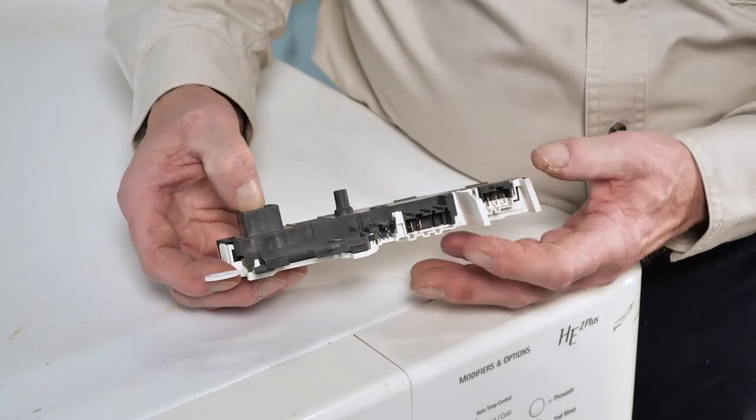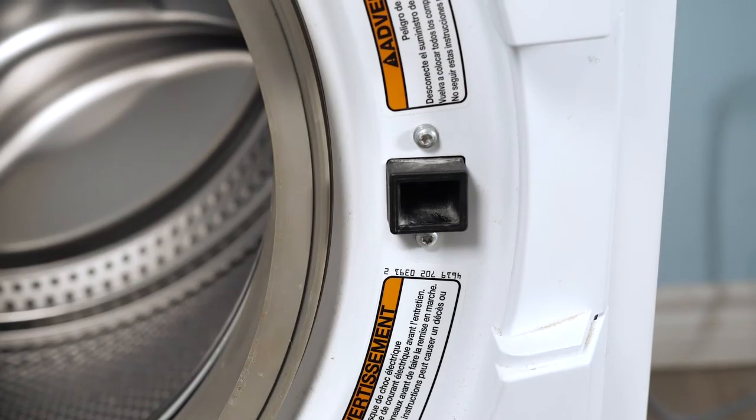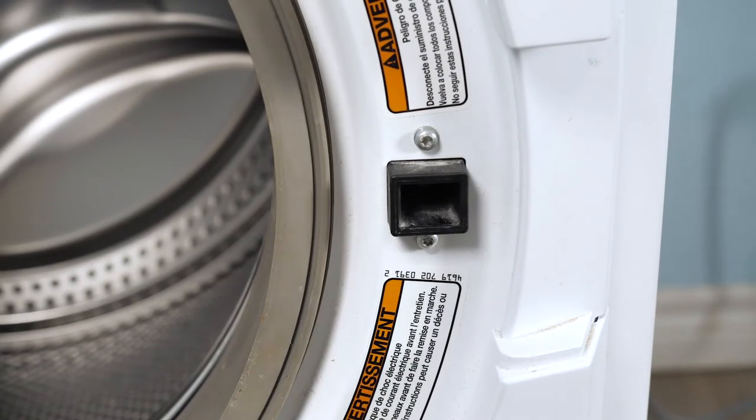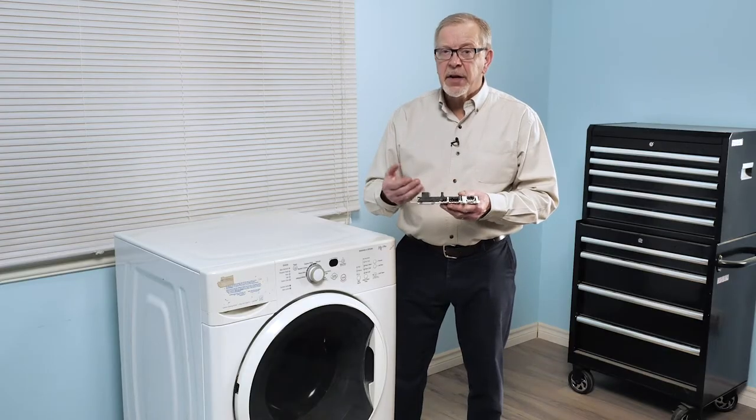The door lock assembly consists of a door switch, some type of a locking mechanism that is typically controlled by either a solenoid or a wax motor, and then a door lock switch. The door lock switch gets activated only when the door is actually in a locked position, not necessarily when it's just closed.